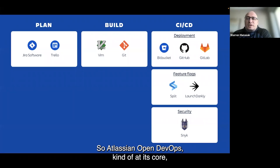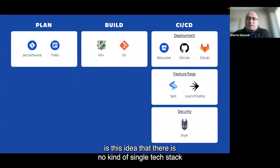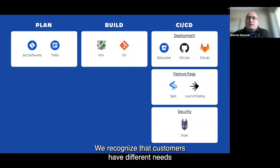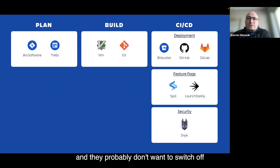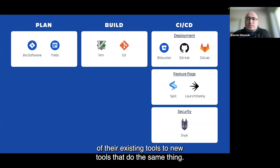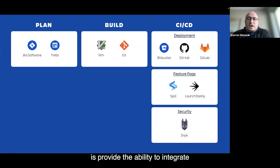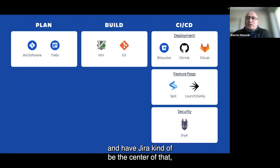Atlassian Open DevOps is built on the idea that there is no single tech stack sufficient for all customers. We recognize that customers have different needs and already have existing tools they use, and they probably don't want to switch to new tools that do the same thing. So instead, we provide the ability to integrate a vast array of tools into Atlassian Open DevOps, with Jira at the center tying everything together.